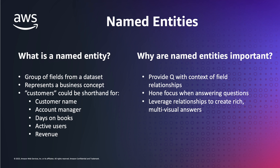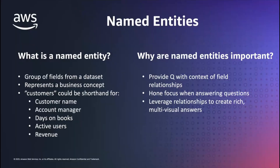So why are named entities important? They provide Q with the context of field relationships, so we're able to say that account managers and these other things go with customers, whereas other fields of my data might not. It could be that my dataset is very wide and I have other business data included, or it could be that my other fields are things like artifacts from my ETL pipeline — maybe different timestamps or things that just shouldn't be considered when talking about customers. It helps focus Q on just the relevant fields when answering questions. You can have multiple named entities in a topic, and it helps Q leverage these relationships to create those rich multivisual answers.